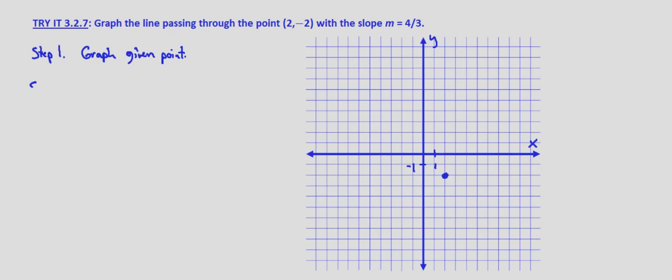Now step two, find rise and run. So we're given that m equals 4 thirds but we also know that that equals rise over run. So the rise equals 4 and the run equals 3.